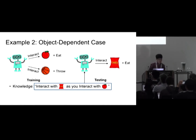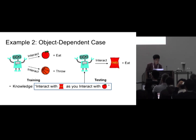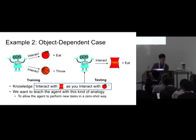However, if someone says 'interact with chips as you interact with apple', then humans can easily generalize over this because humans can understand this analogy and perform the interaction with chips as they would for apple. We want to teach the agent this kind of analogy because analogy allows the agent to perform new tasks in a zero-shot way without having to train on these new tasks in a reinforcement learning setup.